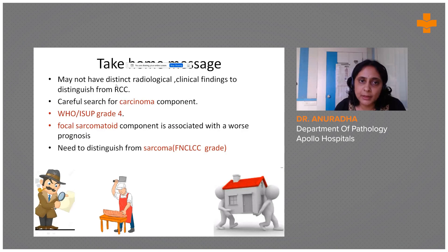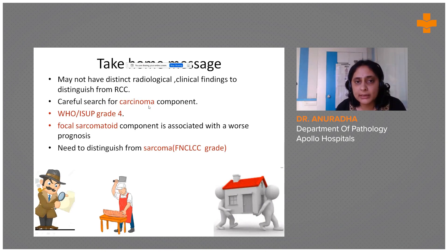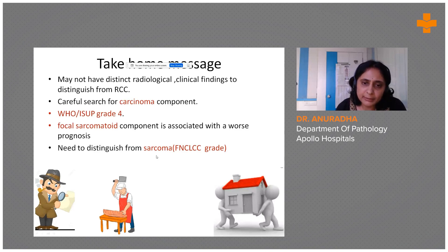The take-home message is: leiomyosarcomas do not have distinct radiological or clinical findings to distinguish them from RCC, so it is the pathologist who will be able to identify this tumor. When we find a sarcomatoid component, please search for different-looking areas, especially a carcinomatous component, because even a focal sarcomatoid component puts it in the worst prognostic category grade four. If we are not able to identify a carcinomatous component and only sarcomatous areas are found, we need to distinguish from other sarcomas arising in the renal parenchyma.